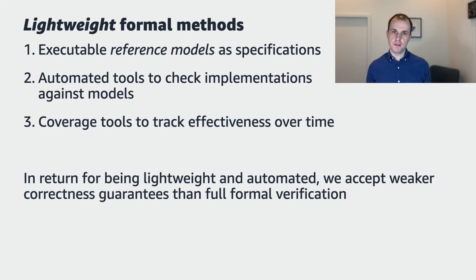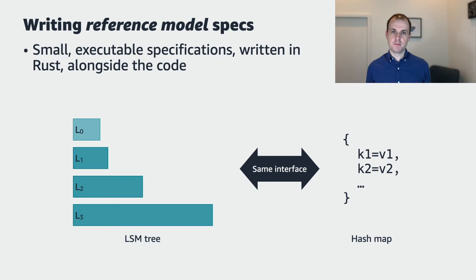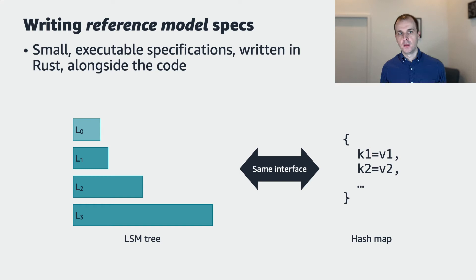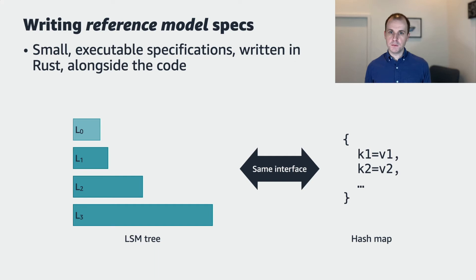The first question we have to answer for any formal methods project is, how do we get a specification of the expected behavior? In other words, how do we know what the system is supposed to do? We wanted specifications that would live alongside the code and be updated by engineers, so that our validation would continue working for future code changes. So to define our specifications, we write what we call reference models. These are small, executable specs, written in Rust, that live alongside the code.